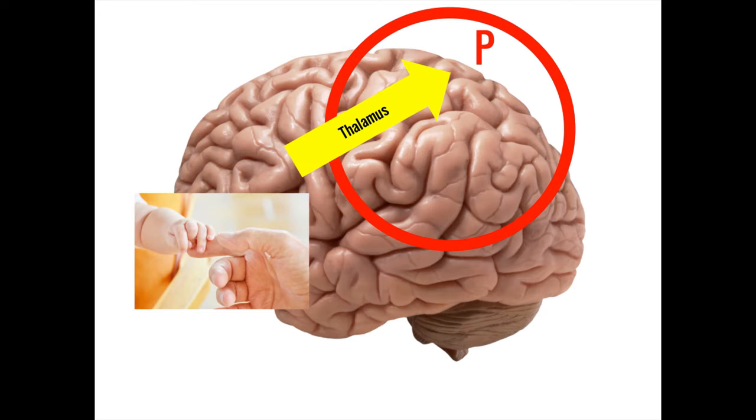Recall from the last video that the thalamus is involved in processing sensory information. From this, we can learn that the specific effects that the basal ganglia have on the motor signal is heavily reliant upon sensory information.